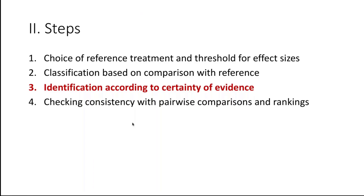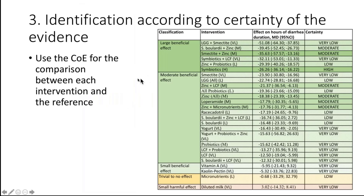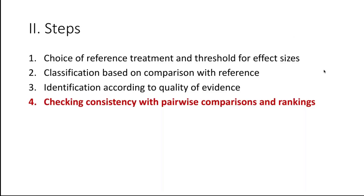The next step is the identification according to the certainty of the evidence. We now produce a table that includes a rating of the certainty of the evidence for the interventions described, adding the certainty rating to the classification alongside the actual magnitude of the effect. Those classified as providing a large beneficial effect might show that for the largest effect there was only very low certainty, while for other large-effect interventions there was moderate or high certainty — helping us bring these pieces of information together for classification.